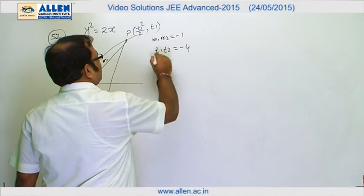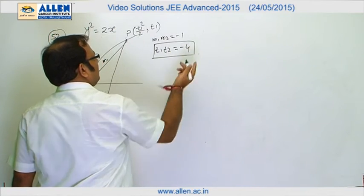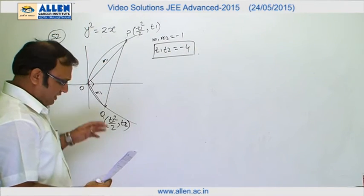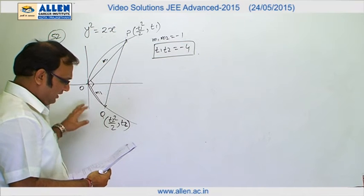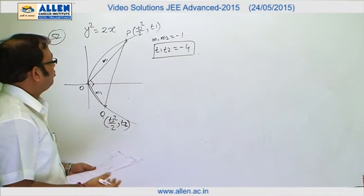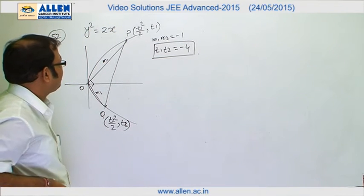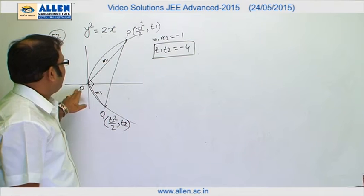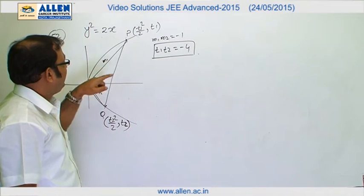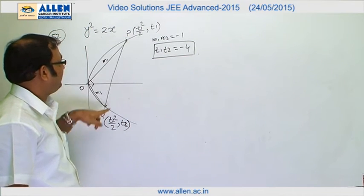Further, what it says is the area of this particular triangle is 3√2. So we can definitely apply the area formula.